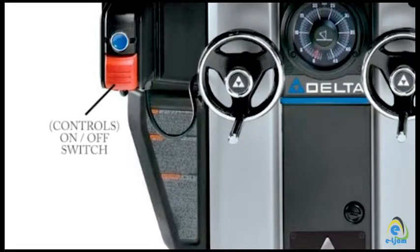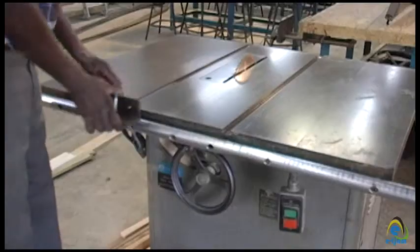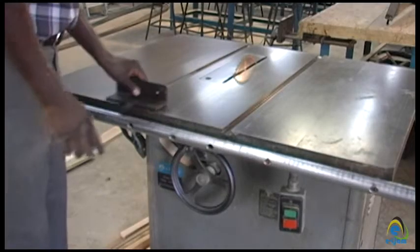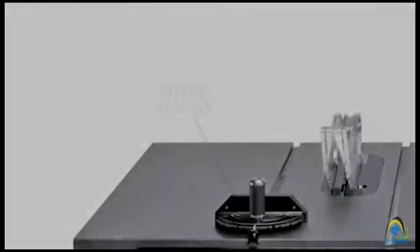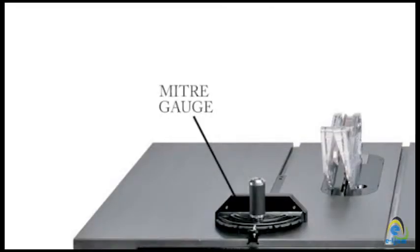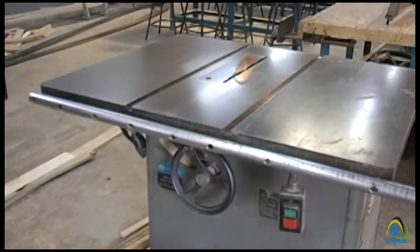Controls: these are switches which turn the machine on and off. Miter gauge: it is used for cross-cutting and fits into a groove on the table. The gauge can be locked at a desired angle, usually between 45 and 90 degrees, and can also be removed when not required.